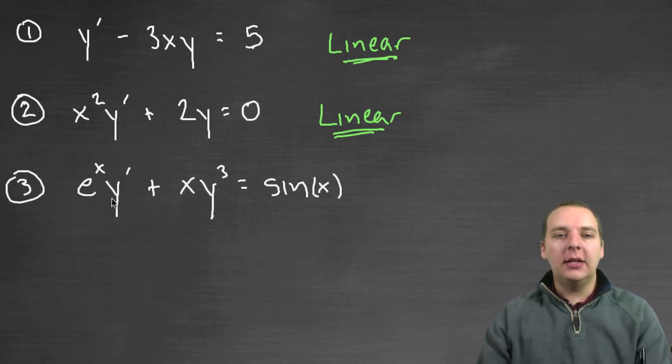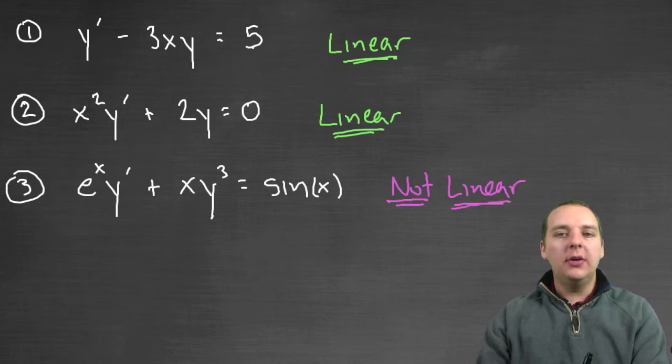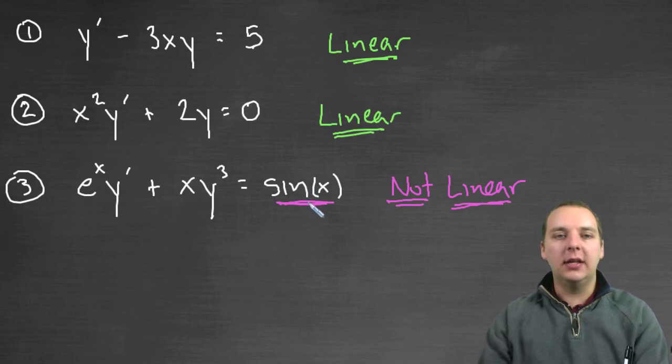How about this one? e to the x y prime plus x times y cubed equals sine x. I'll go ahead and tell you this is not linear, but see if you can figure out why. Why do you think this guy is not linear? Is it because of this guy? No. It's not because of that. You can have a function of x on the right hand side.